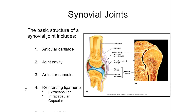There are a couple of other important structures associated with synovial joints. Synovial joints have what's known as the articular capsule, represented in green in the diagram. This capsule forms the wall of the joint cavity and also attaches the two bones to each other.